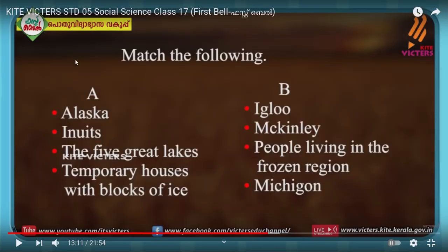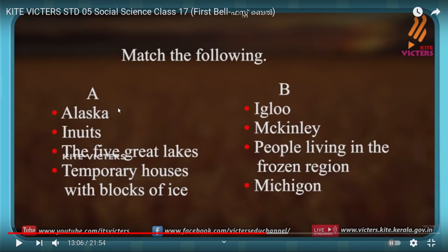Match the following: Alaska — highest peak; Inuits — people living in the frozen regions; the five great lakes — Superior, Michigan, Huron, Erie, Ontario; temporary house with a block of ice — igloos.